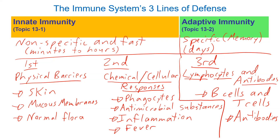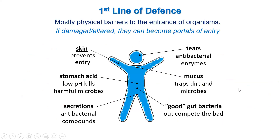Let's get into innate immunity. I want you to think of this as barriers, and sometimes chemical responses that are involved with these barriers. I found this picture on Google Images that summarizes a lot of the first line of defense, of which the skin is really the big part. The skin is super important — it not only keeps our body parts in, but it does a lot for our innate immune system.